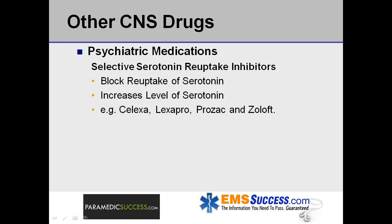Selective serotonin reuptake inhibitors block the reuptake of serotonin, which increases the level of serotonin in the brain. Common selective serotonin reuptake inhibitors are Celexa, Lexapro, Prozac, and Zoloft.